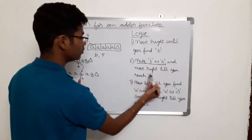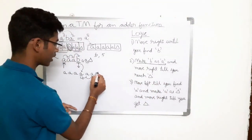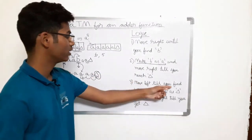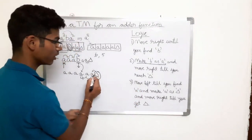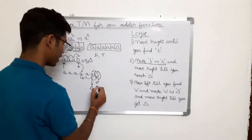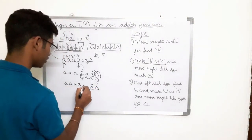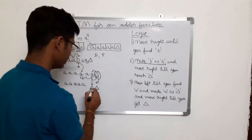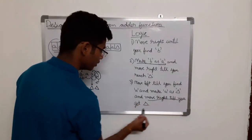Move right till you reach delta — move right, move right, move right — now you have reached delta. Now implement the third step: move left till you find small a. You have found small a, so make small a as delta. Write the remaining string as it is — we have 1, 2, 3, 4, 5 a's here. You have made this a into delta and now move right till you get delta.